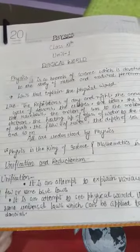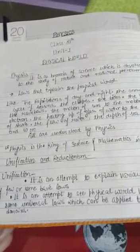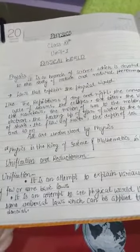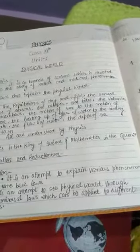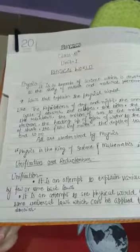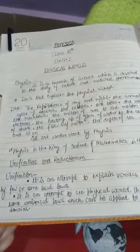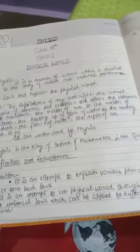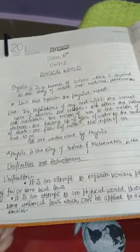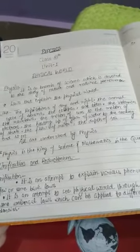The next topic is unification and reductionism. Unification is an attempt to explain various phenomena by few or some basic laws. It is an attempt to see physical world through some universal laws which can be applied to different domains.